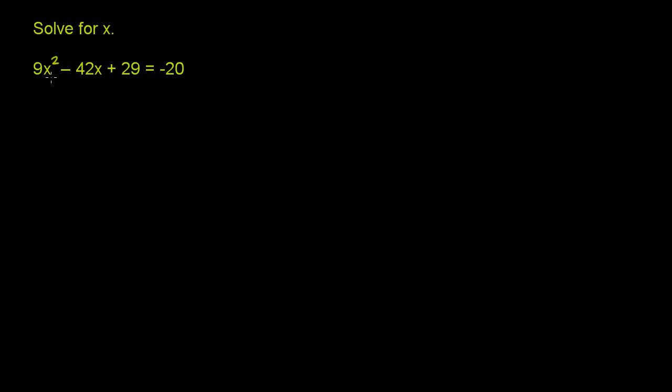So the first thing we want to do is not to factor the left-hand side, but to make sure we have a quadratic equation equaling 0. The best way to do that is to add 20 to both sides.